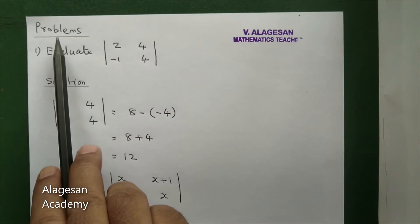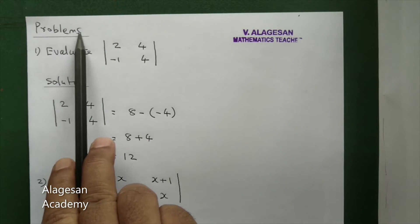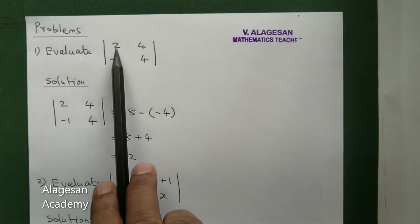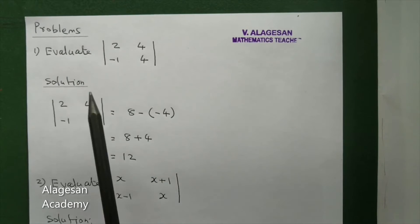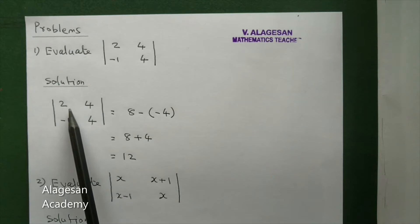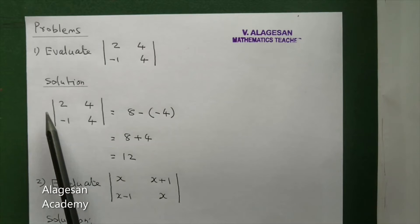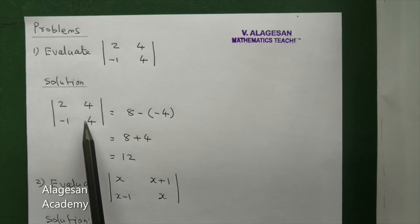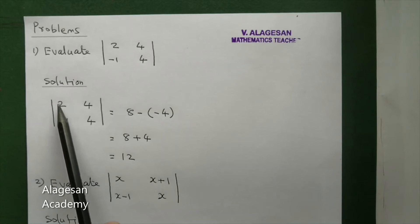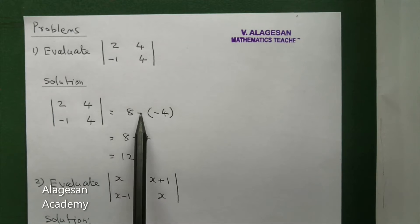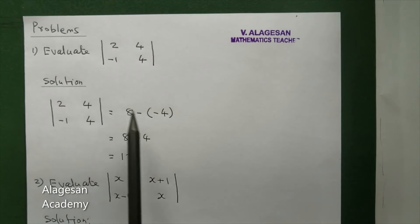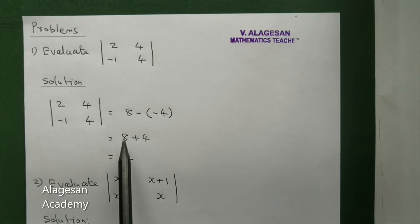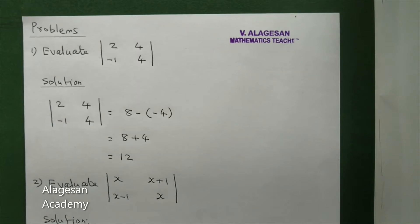Hi students, next we are going to see problems. First question: evaluate the determinant |2 4; -1 4|. This is a determinant of order 2. So determinant |2 4; -1 4| equals this into this minus this into this. So 2 into 4 is 8 minus -1 into 4, which is -4. Minus into minus is plus, so 8 plus 4 equals 12.